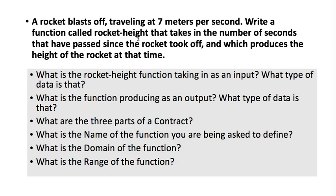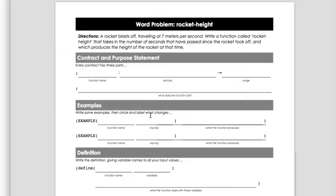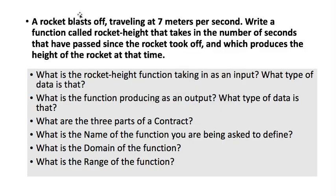What are the three parts of a contract? Remember, we talked about that — name, domain, and range. What is the name of the function you're asked to define? What is the domain — what goes into the function — and what is the range? In your workbook, right here in the top part with the function name, domain, and range — the contract part — go ahead and write those things in. Pause now and write in the name of the function, the domain (what type of data goes in), and the range (what type of data comes out).